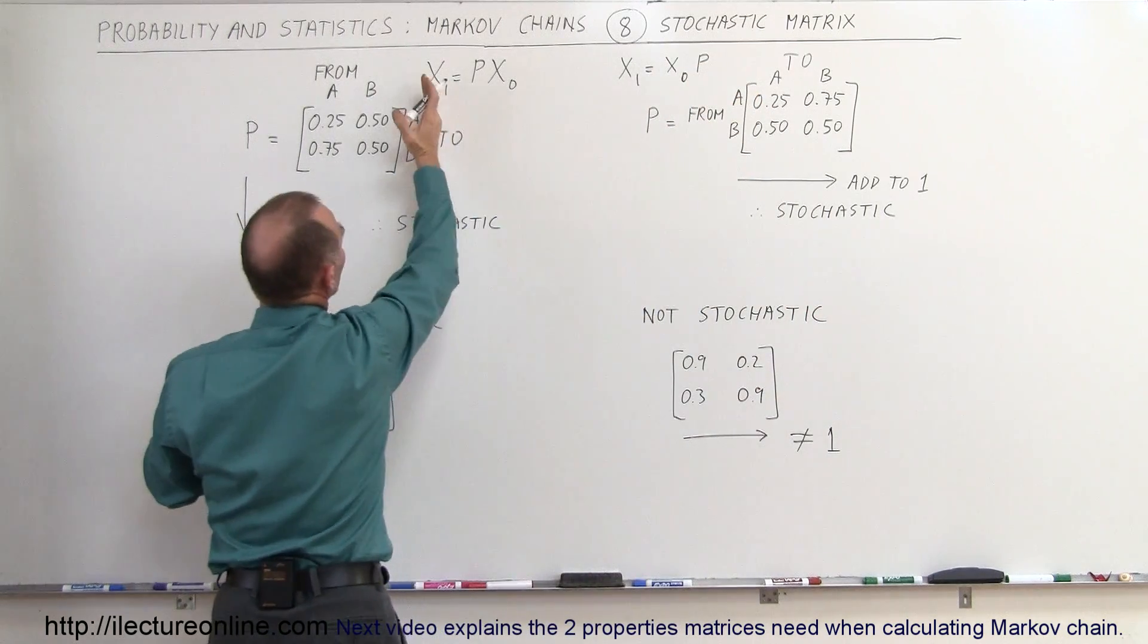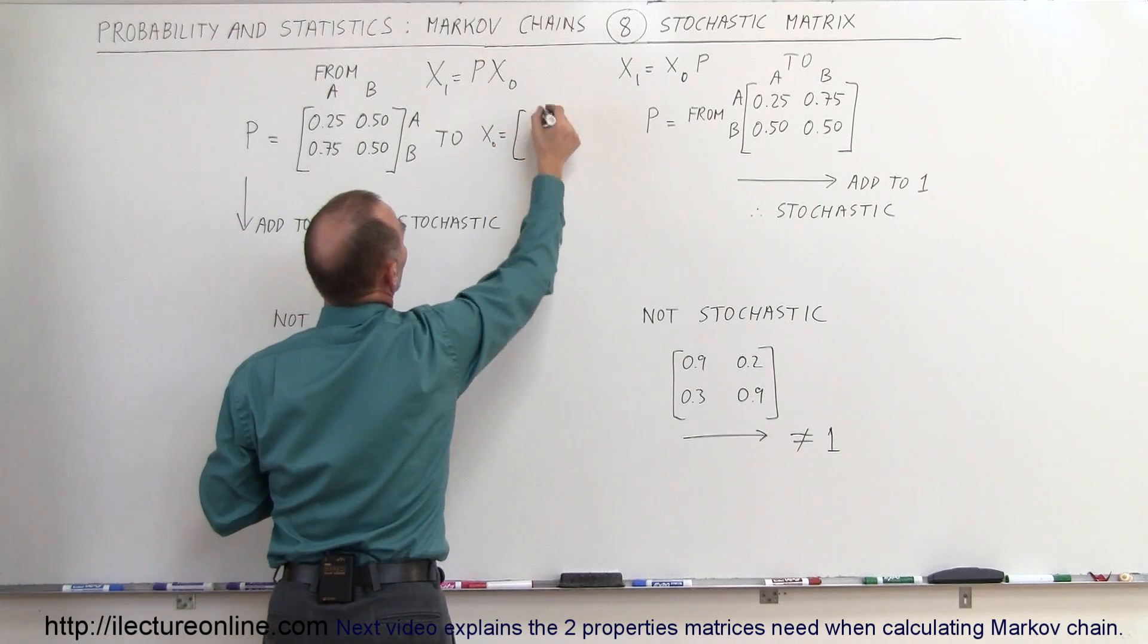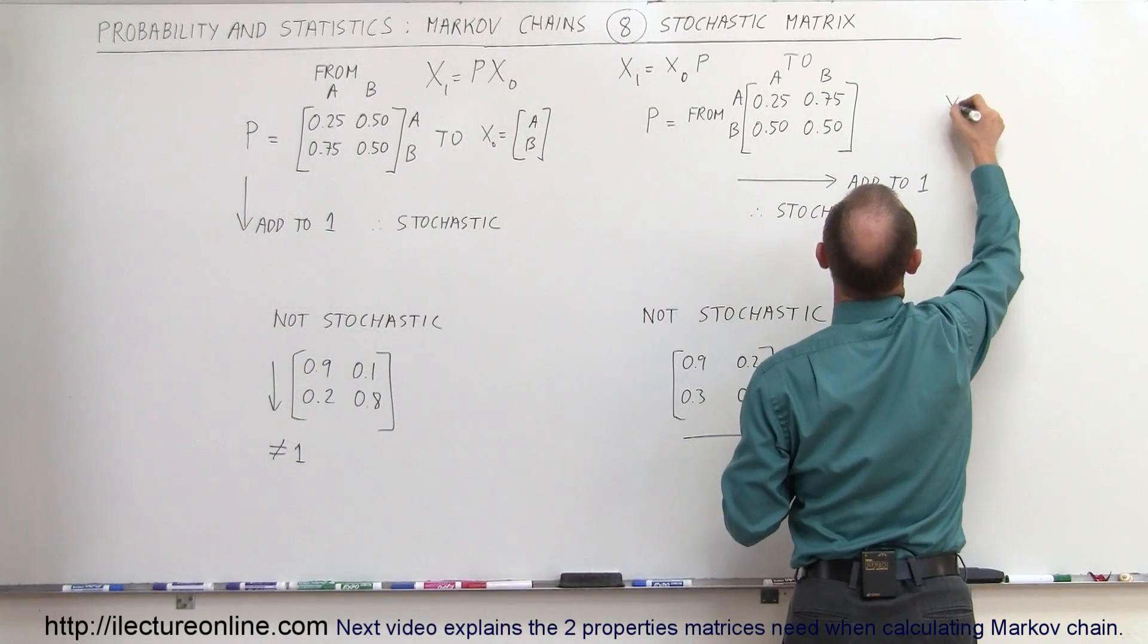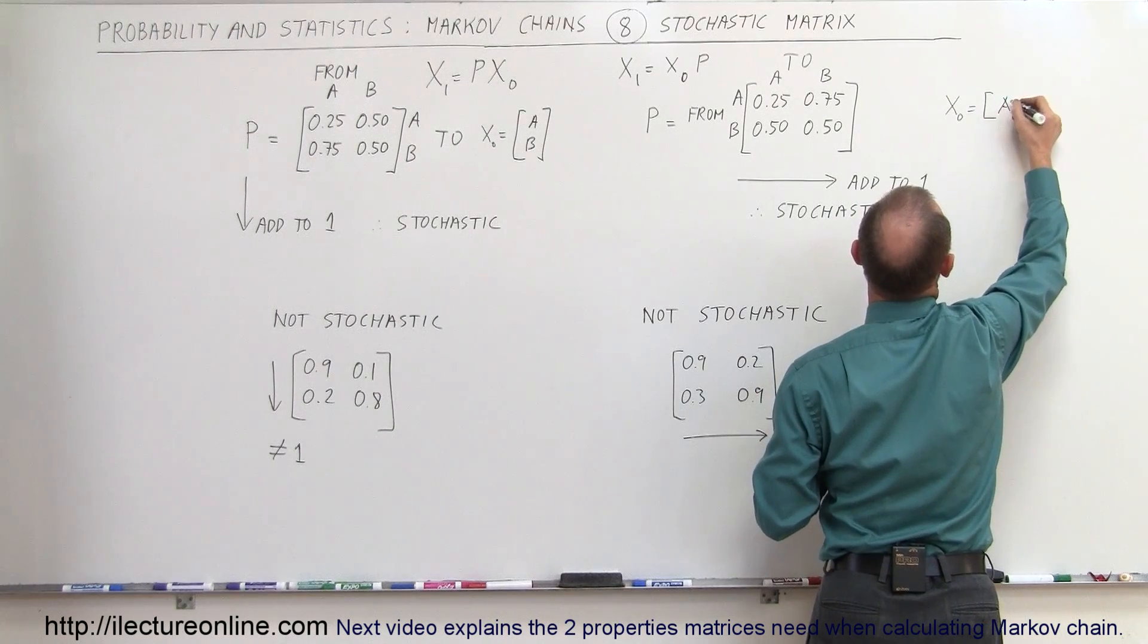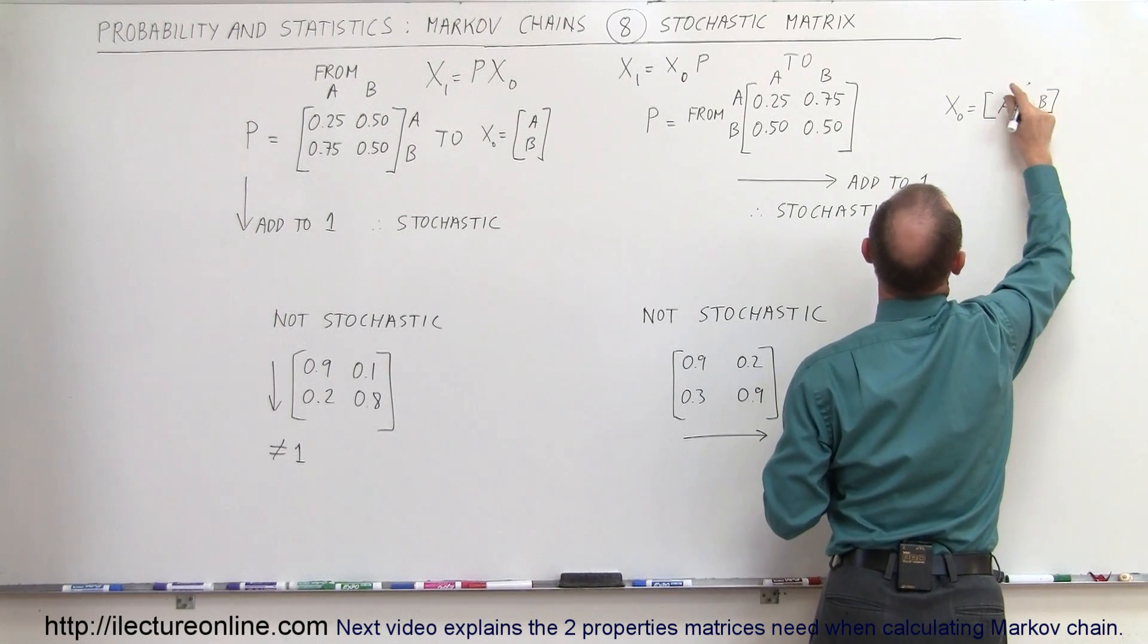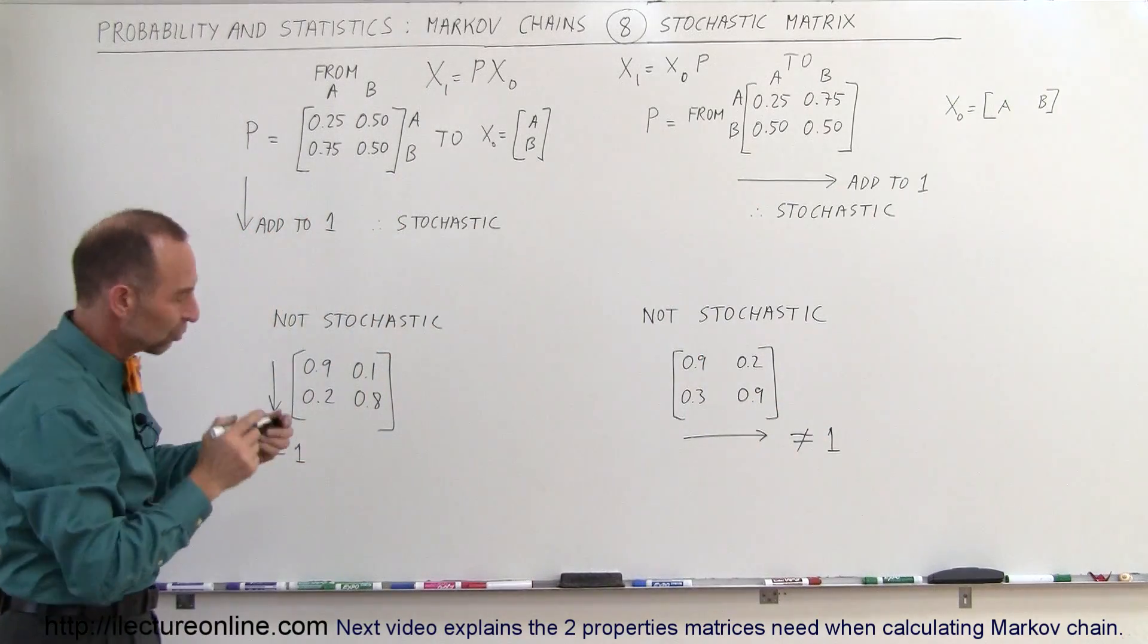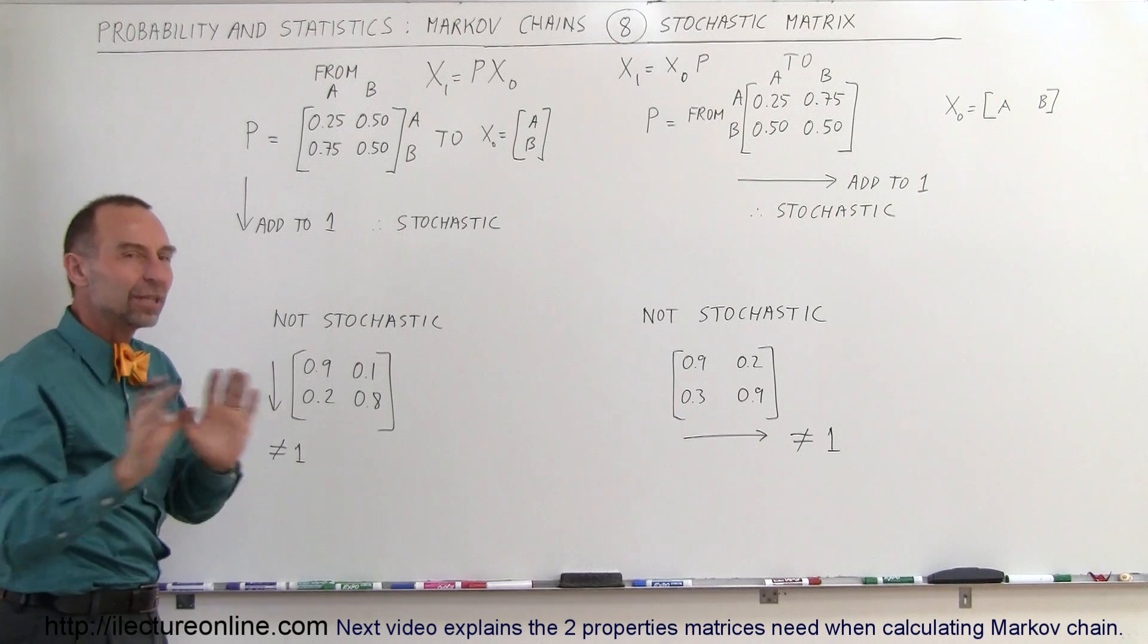Realizing that here X sub 0, the initial state is written like this A to B in a vertical direction. Here we can say that X sub 0 is equal to A and B like this in a horizontal methodology. So again notice there's two different ways in which we can calculate Markov chains and I'll show you some examples with the other method as well.